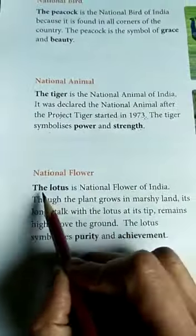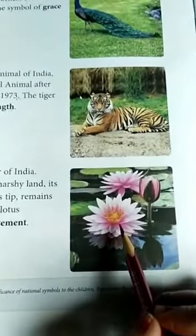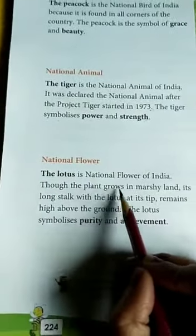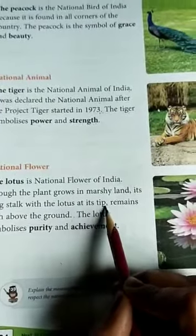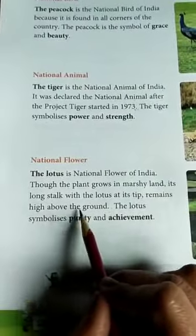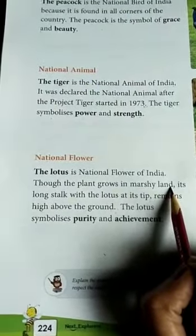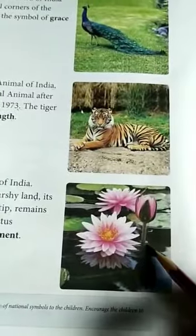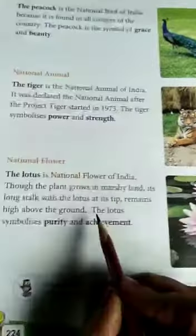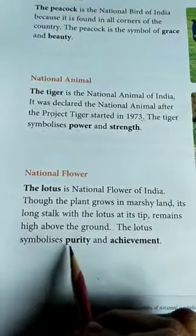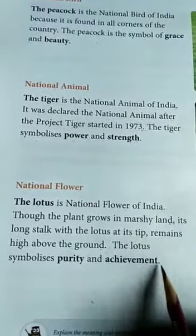National Flower. The lotus is the national flower of India. Lotus जो है वो हमारे देश का राष्ट्रीय फूल है. Though the plant grows in marshy land, its long stalk with the lotus at its tip remains high above the ground. हालांकि यह कीचड़ में उगता है, लेकिन इसकी long stalk इसको जमीन से ऊपर की तरफ ले जाती है. The lotus symbolizes purity and achievement — पवित्रता और उपलब्धि का प्रतीक है.